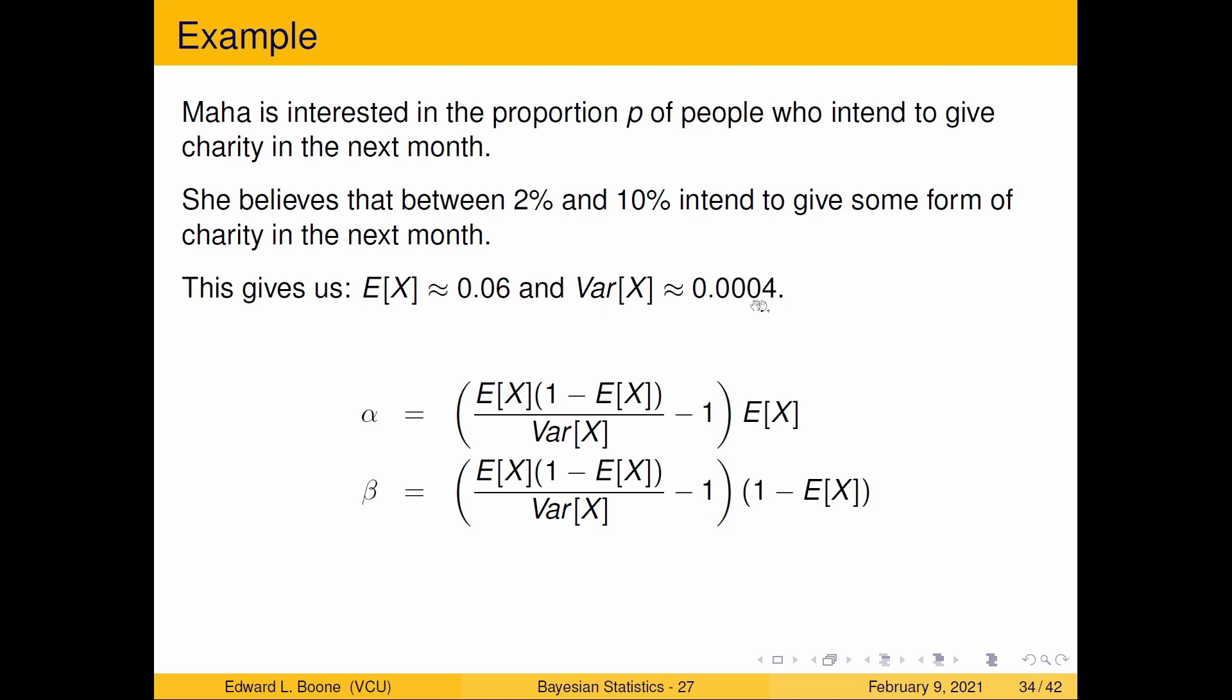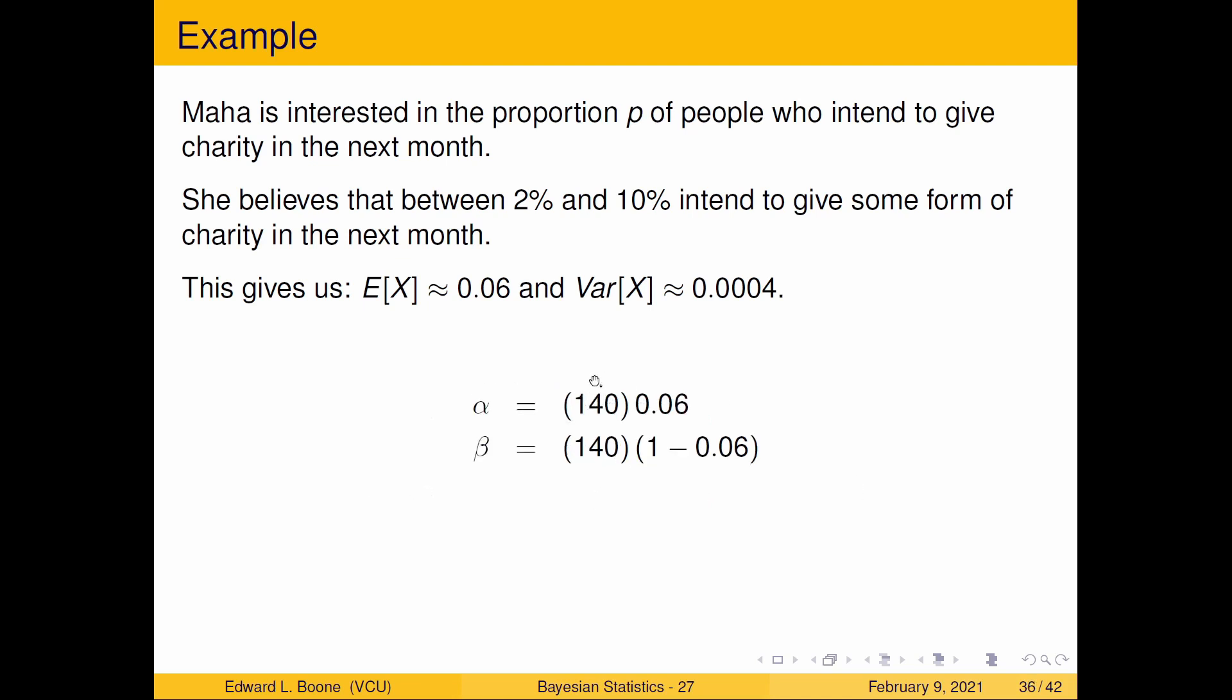Calculate this bit first. And you get 140. And then you multiply this out. And you end up with 8.4 and 131.6. These don't have to be whole numbers. If you end up with things that are not whole numbers, don't worry. Don't round anything off. Just leave it the way it is.